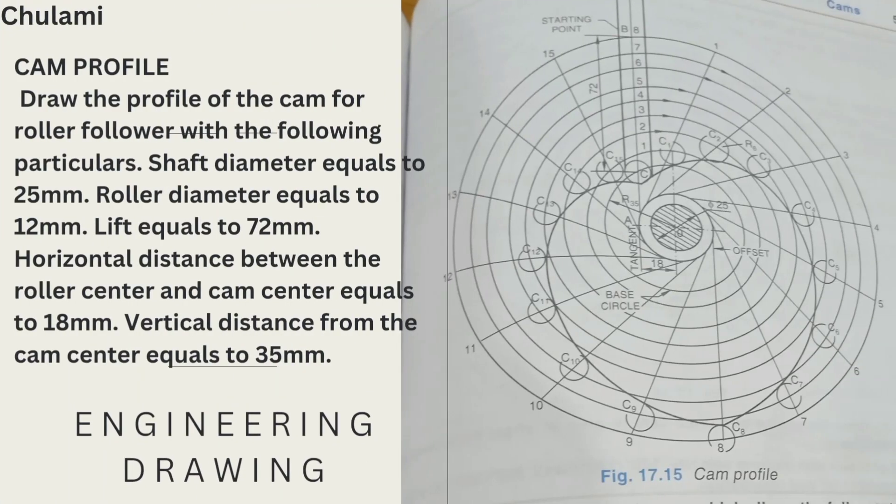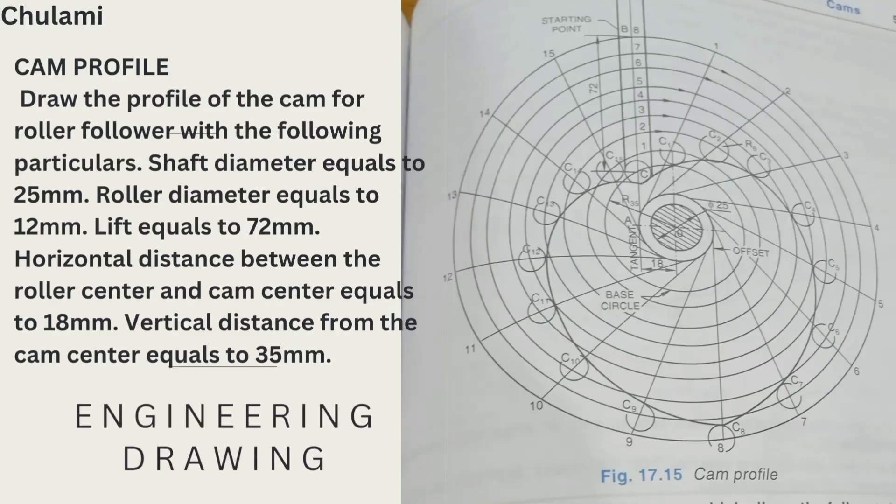Draw the profile of a cam for a roller follower with the following particulars: shaft diameter equals 25 millimeter, roller diameter equals 12 millimeter, lift equals 72 millimeter, horizontal distance between roller center and cam center equals 80 millimeter, vertical distance from the cam center equals 35 millimeter. The first thing you need to know is that we're given shaft diameter that will be 25 millimeter, that means in radius I will have 12.5 millimeter radius.